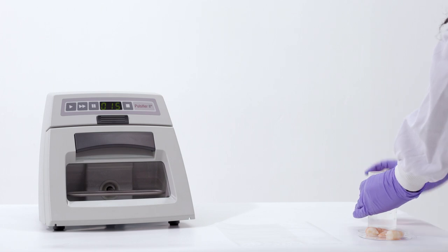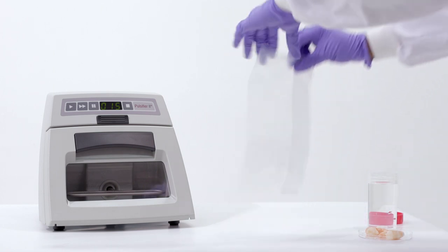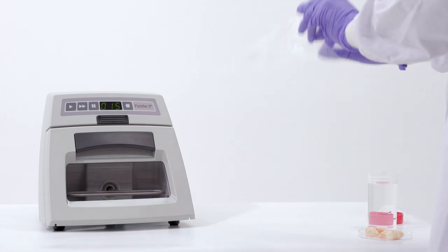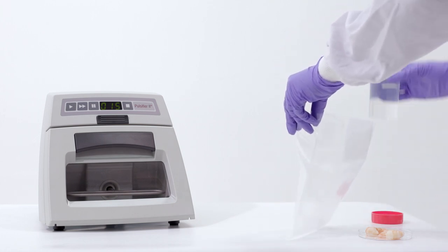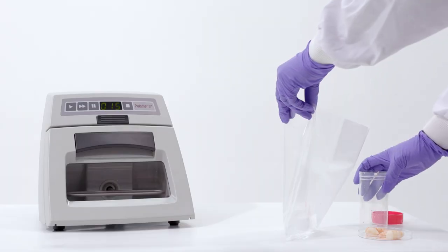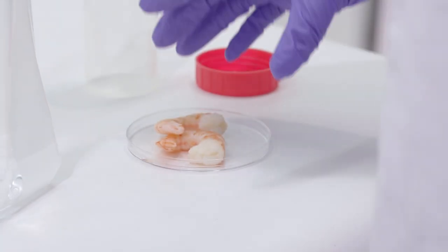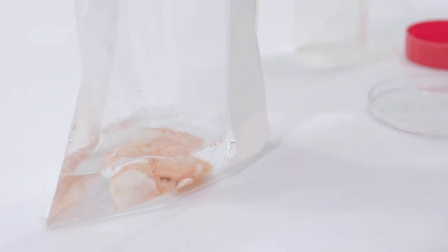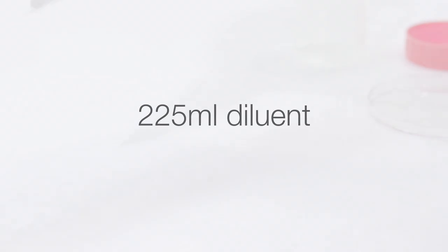Add 225 ml of diluent to a Pulsifier bag. The diluent used is dependent on the analysis being required. Then add 25 g of sample into the Pulsifier bag containing the diluent. Sample size and diluent volumes can vary. However, we recommend the maximum volumes and quantities to be 225 ml diluent and 25 g of sample.